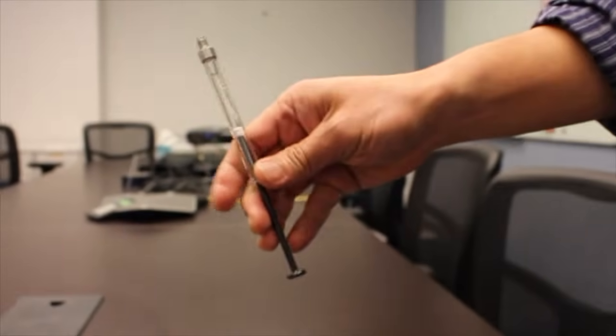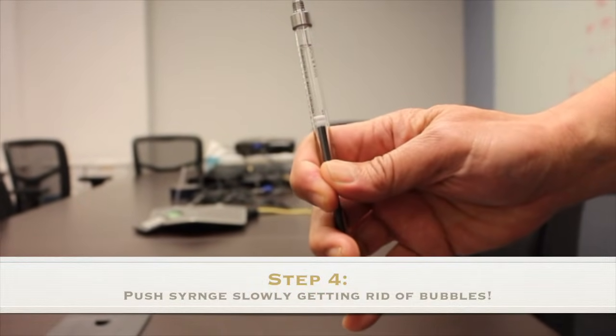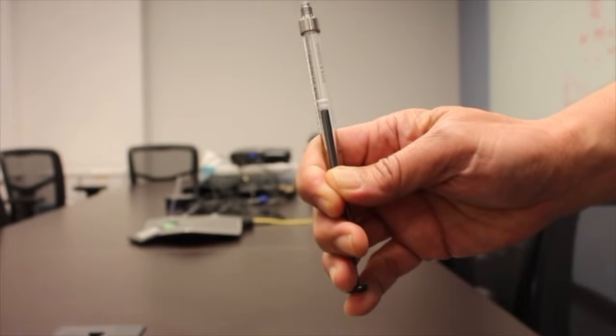As you can see now the air bubble has migrated to the top. Now all you have to do is push the syringe plunger up and that removes the air bubble.